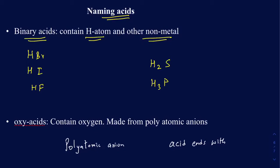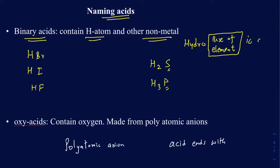When it comes to naming binary acids, you start with 'hydro.' So 'hydro' is going to be the first part of the name. And then the second part of the name is going to be the base of the element name — which in this case is going to be the non-metal, not the hydrogen, but the other non-metal like sulfur, phosphorus, and so on. And then it's going to end with 'ic acid.'